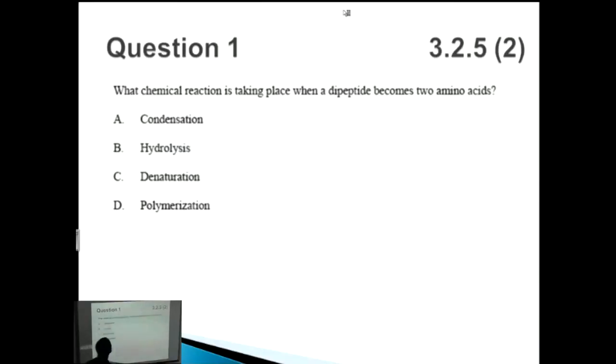Let's look at this question. Question one: what chemical reaction is taking place when a dipeptide becomes two amino acids? This is a relatively straightforward question. All you need to know is that dipeptide here, di means two, and then two amino acids is obviously two amino acids.